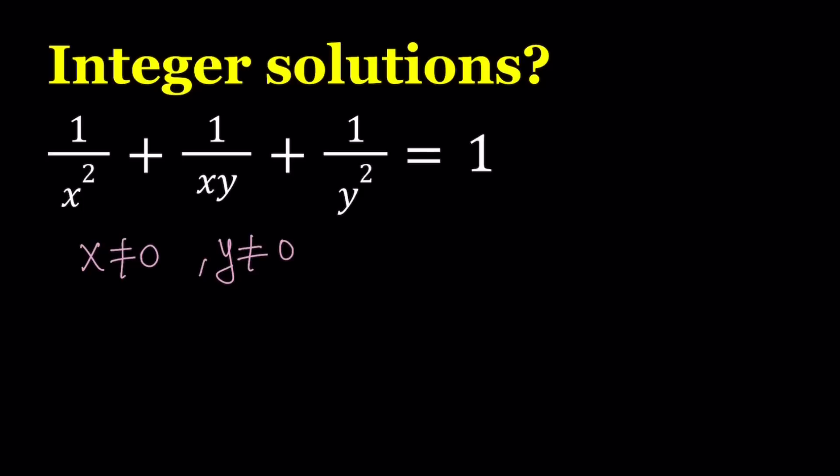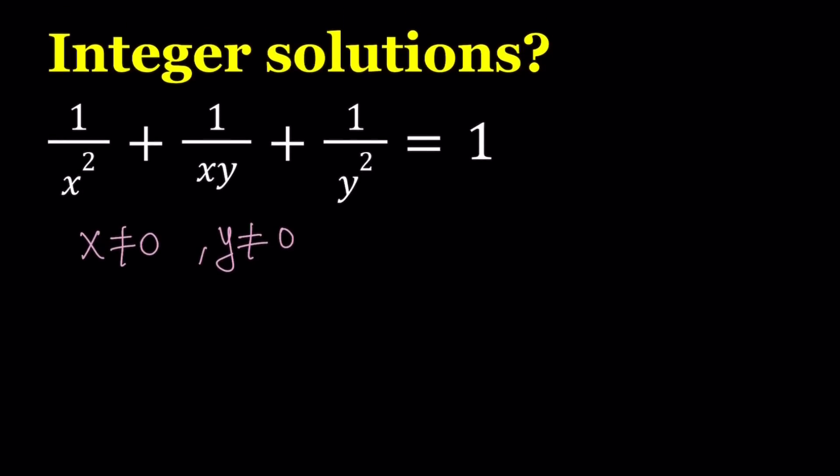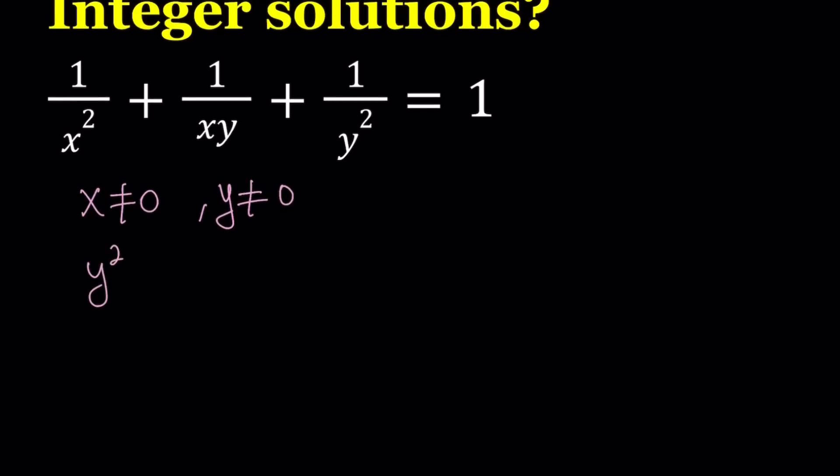Under those conditions, we can go ahead and make a common denominator. Let's multiply by the appropriate terms. So the common denominator would be x squared y squared. Let's multiply the first one by y squared, the second one by xy, and the third one by x squared. And then we'll make a common denominator this way, which is going to be x squared y squared. And that equals 1.